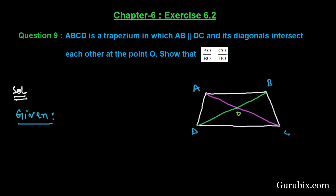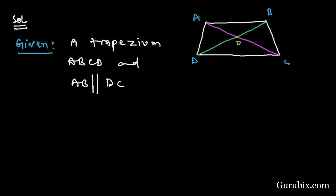We are given trapezium ABCD with AB parallel to DC. We have to prove that AO over BO equals CO over DO. We shall do a construction here.